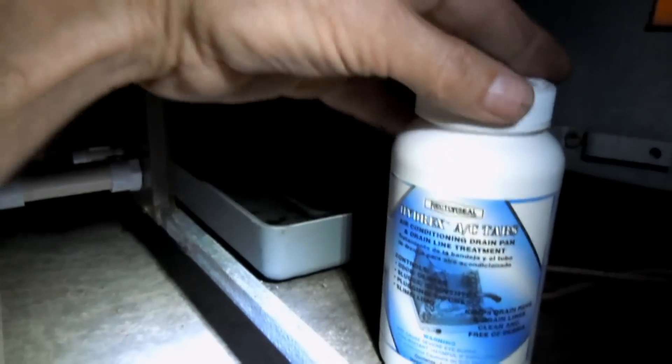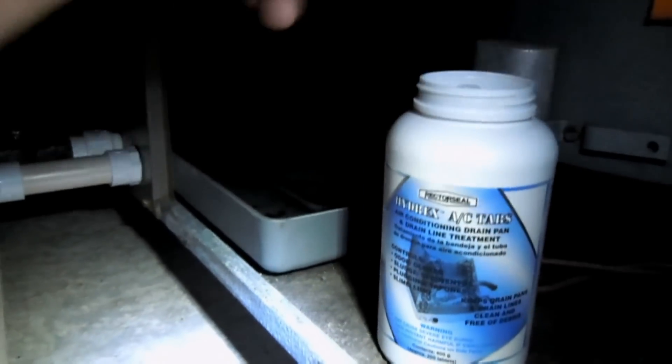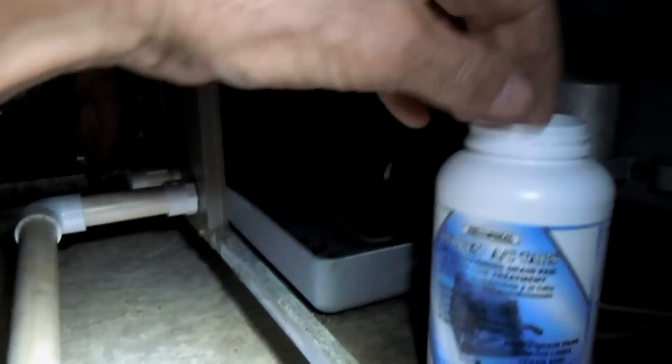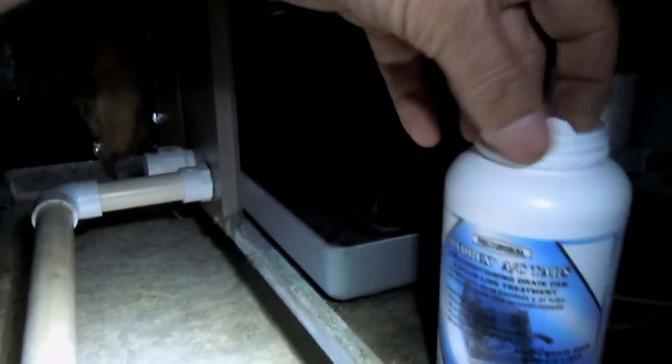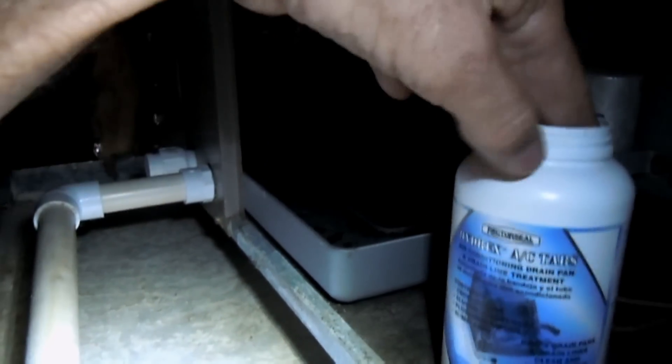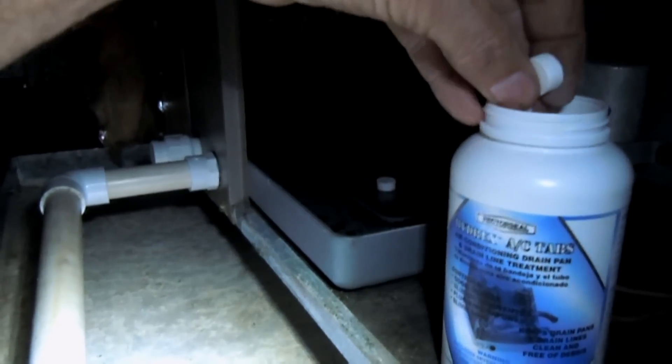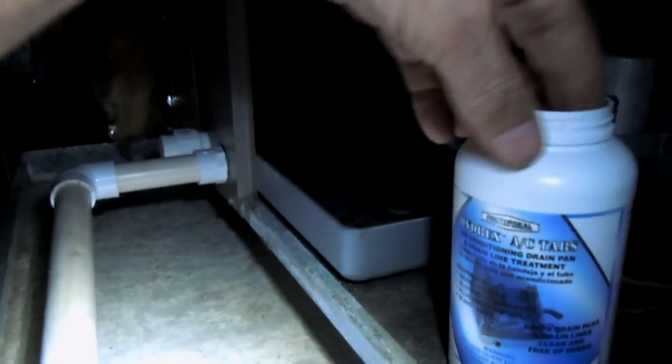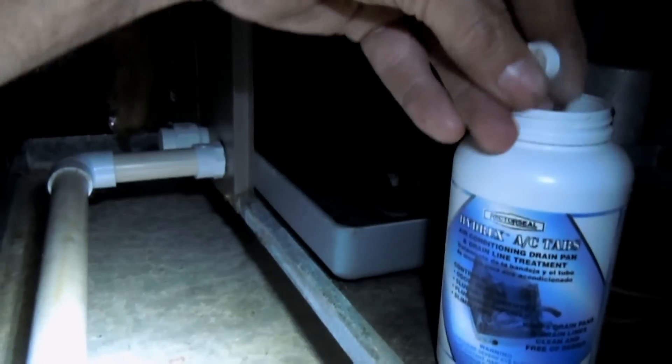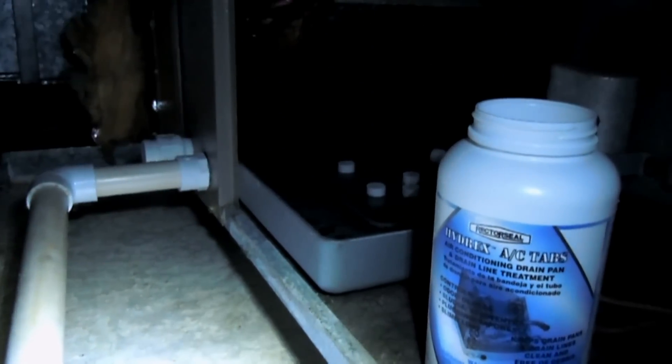Now let's try the Rector Seal Hydrex AC Tabs. That's very simple to use. All you do is use roughly two tablets per ton of air that your air conditioner is rated for. Just drop them right inside the condensate pan in the air handler, and away you go.